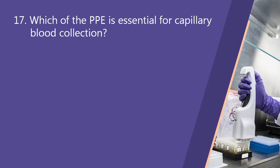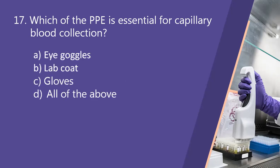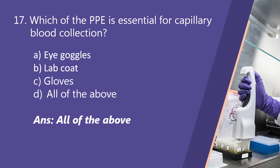Next question: which PPE is essential for capillary blood collection? Option A, eye goggles. Option B, lab coat. Option C, gloves. Option D, all of the above. The right answer is all of the above. PPE stands for personal protective equipment. While collecting a capillary blood sample, a laboratory technician must wear goggles, lab coat and gloves.